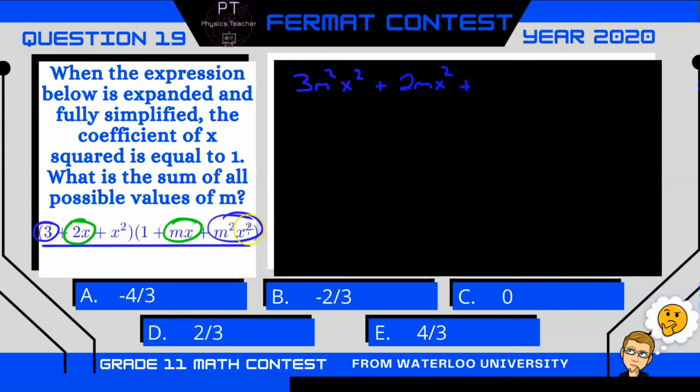Now 2x and m squared x squared is a cubic, so that's not a squared.